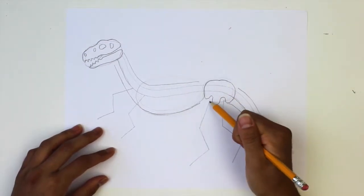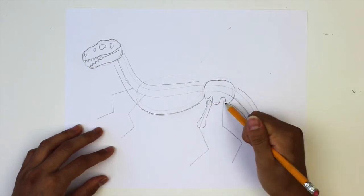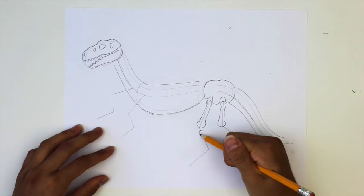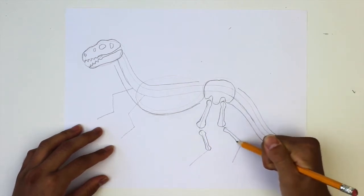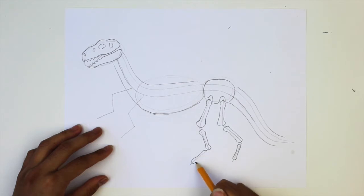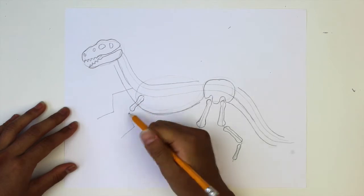Next we'll draw the legs. Draw two big and long bones for the first sections of the back legs. Then draw two smaller bones for the next section, and two even smaller bones for the last section. Do the same for the front legs. Make sure the bones don't touch.